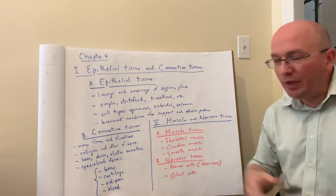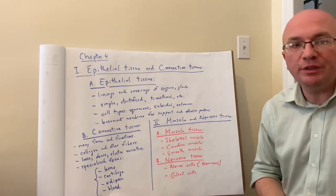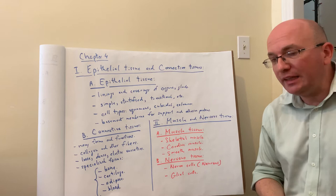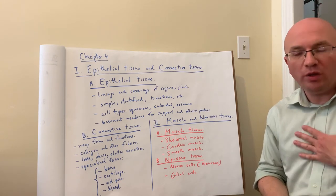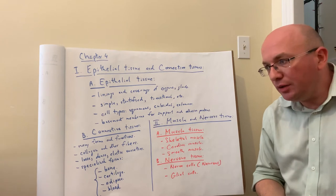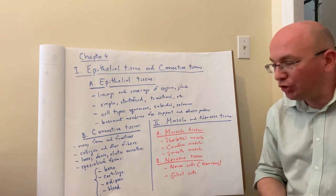For different examples, simple squamous epithelium means you have one layer of flat cells. Best examples would be the capillaries, the smallest blood vessels, or alveoli in the lungs, the air sacs that allow for gas exchange.